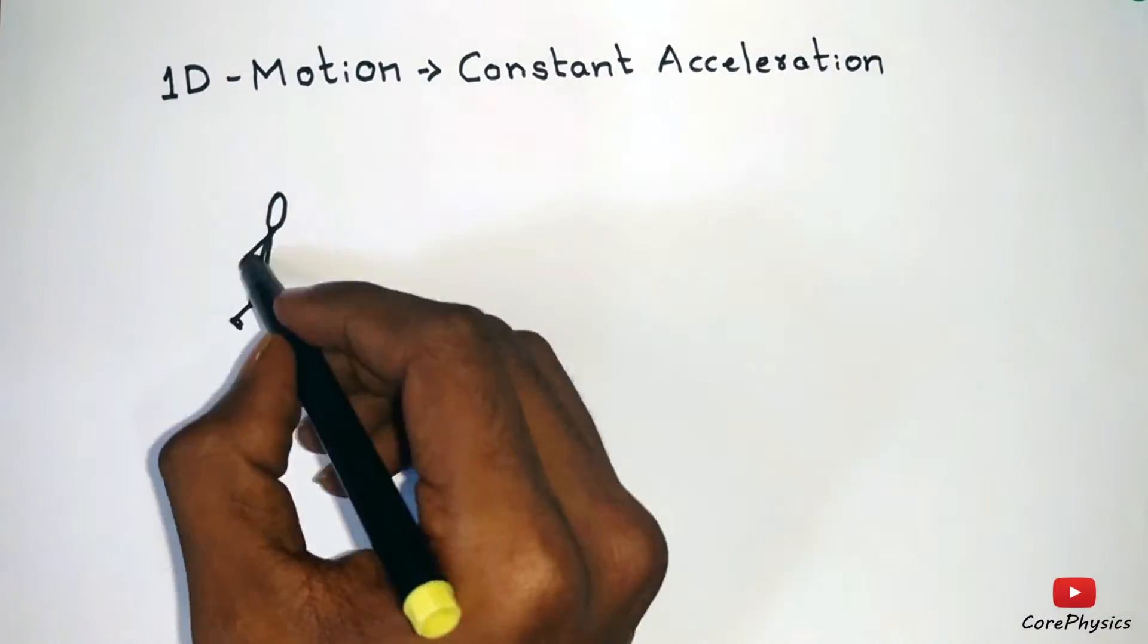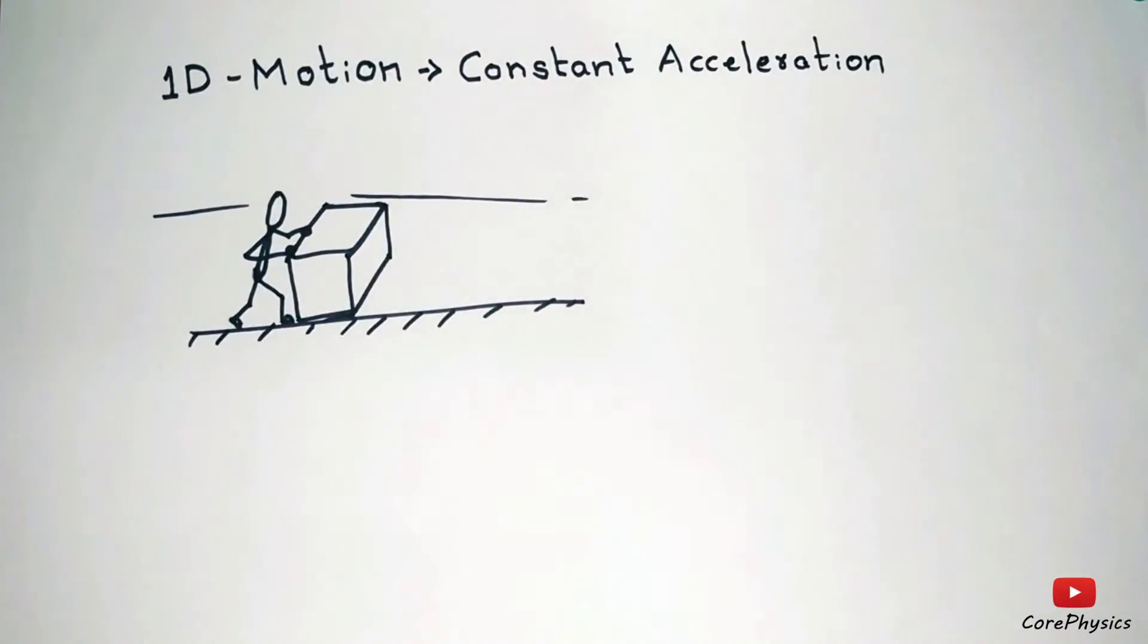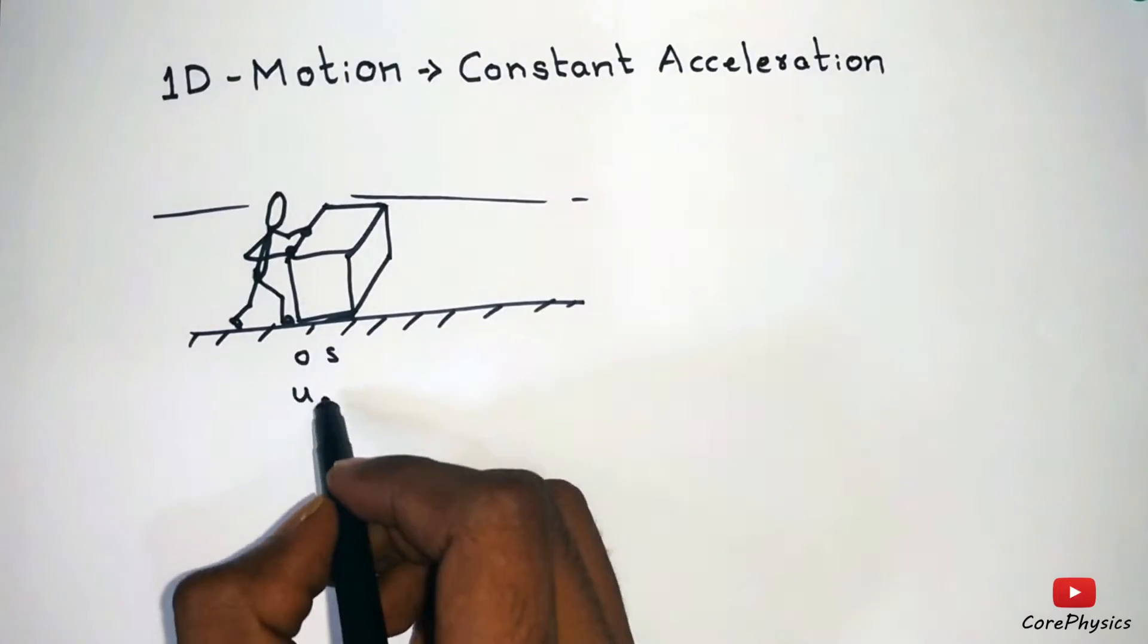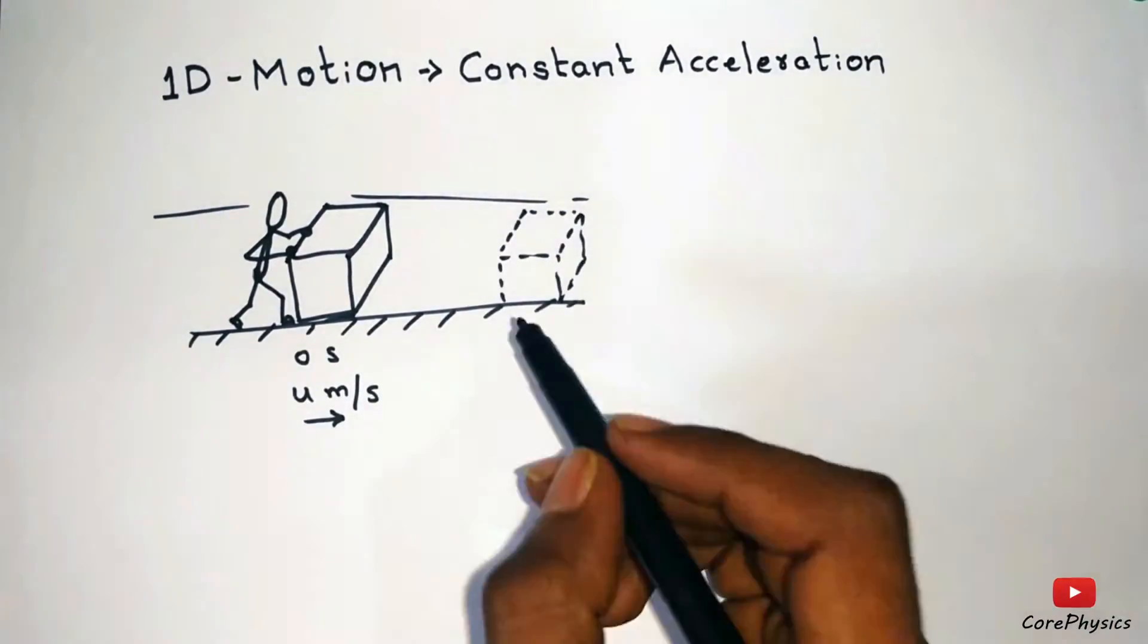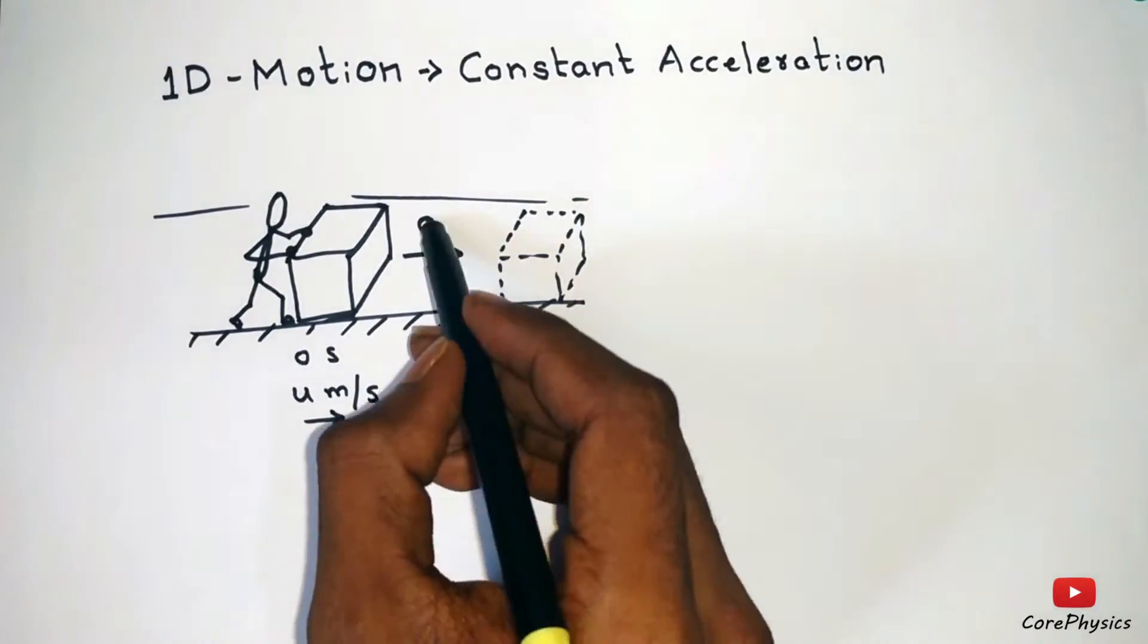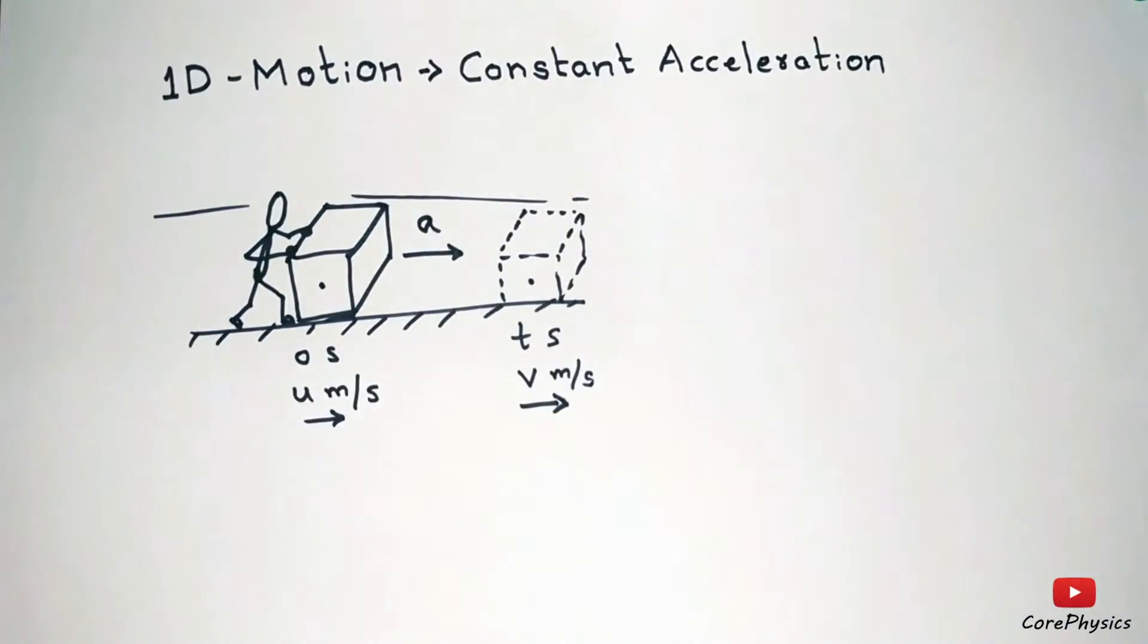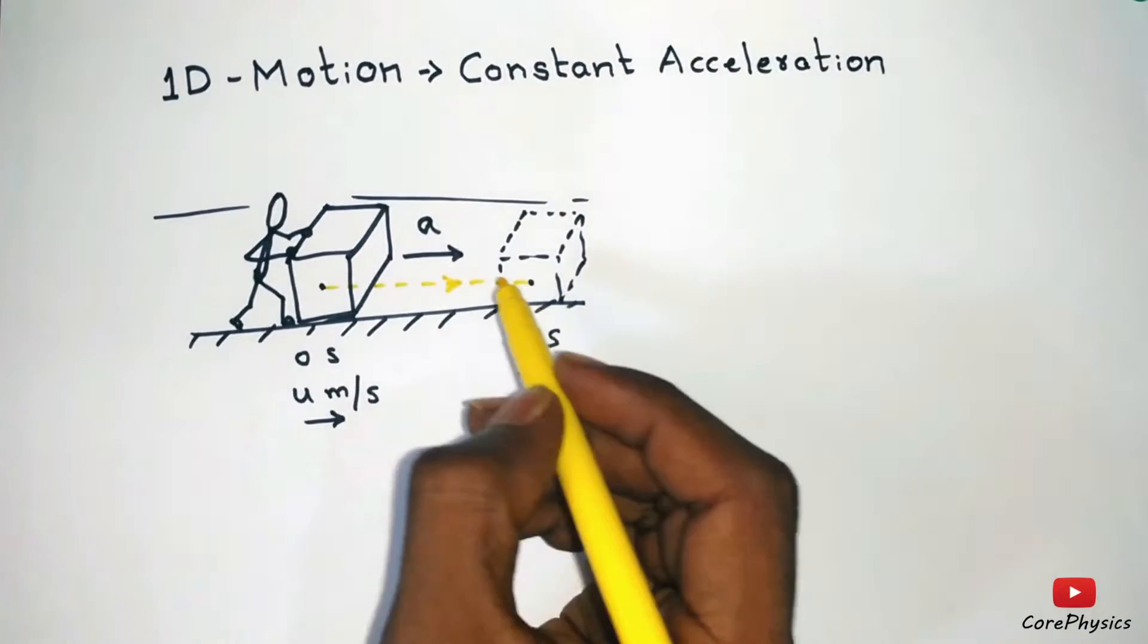In order to derive the equations of straight line motion at constant acceleration, consider an example where a block has an initial velocity of u and after t time it has reached a velocity of v, assuming the constant acceleration is being maintained by the person, and let s be the displacement of the block.